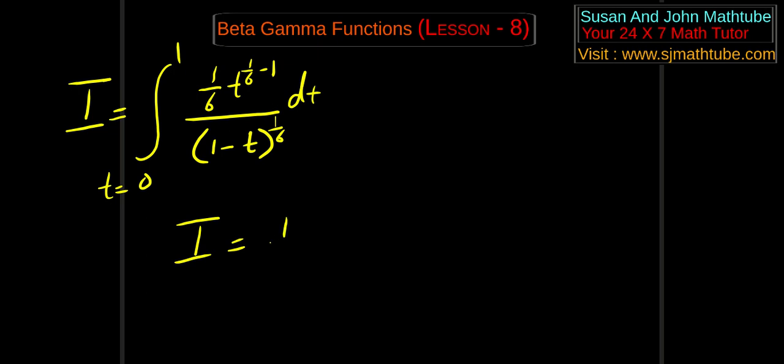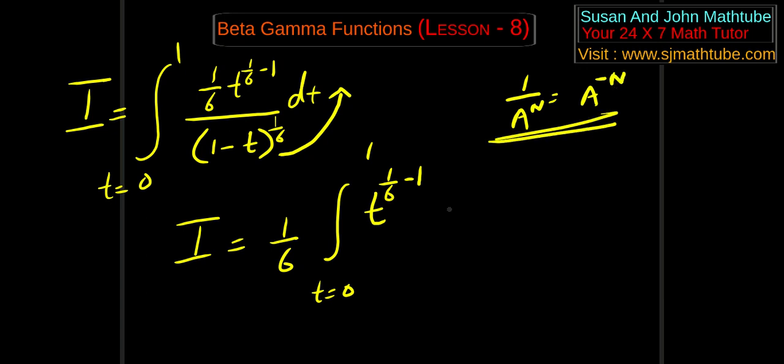That is, i is equal to, I am going to keep that 1 by 6 outside, t equal to 0 to 1, t power 1 by 6 minus 1, and I am going to take this whole thing up. And I am sure you know that 1 by a power n is a power minus n. And with that fact, I am going to write this in the numerator.